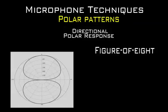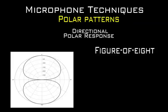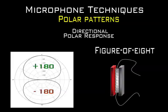A bidirectional, or figure-of-8, mic picks up sound from the front and the rear and rejects signals that arrive from the sides of the capsule. Sounds originating at the rear produce a voltage that is 180 degrees out of phase with the front. Sound waves arriving at 90 degrees off-axis produce an equal but opposing pressure at both the front and rear of the diaphragm, resulting in no output. Ribbon microphones were the first bidirectional acoustic transducers because the motion of the ribbon results from differences in pressure between the front and rear faces.